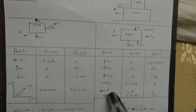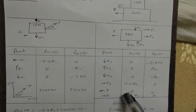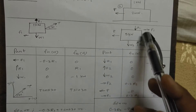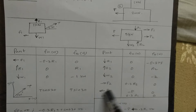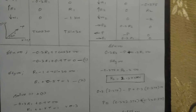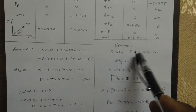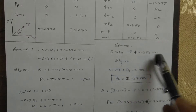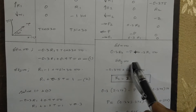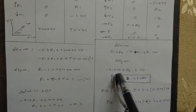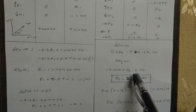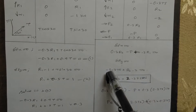For the second block free body diagram: R1 is going down, capital P is going left. Taking summation of F of x equal to 0: 0.3 R2 minus P plus 0.3 R1 equal to 0. Summation of F of y equal to 0: R2 minus 2 minus 0.375 equal to 0.